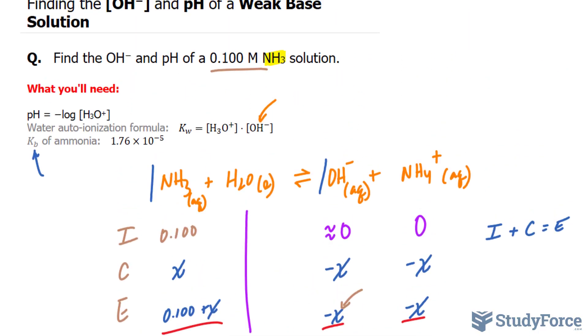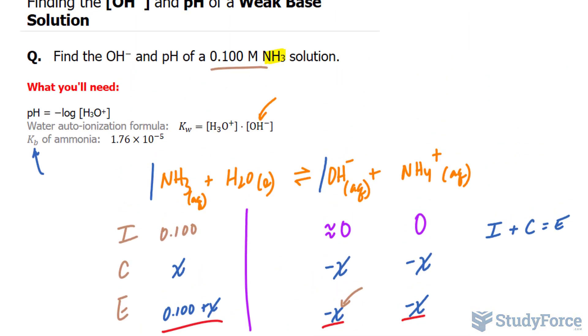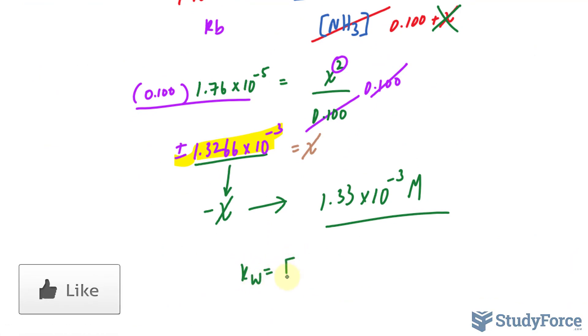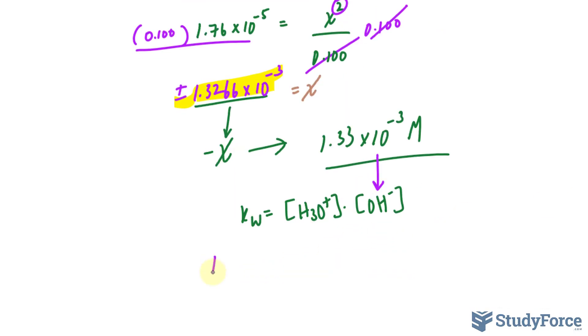We have the concentration of OH, and we now use the autoionization formula. Here's what it looks like. K sub w is equal to the concentration of H3O plus times the concentration of OH minus. I'll substitute this number right into there, and I know that Kw is 1.0 times 10 to the power of negative 14, and it's 1.00. It's three significant figures.